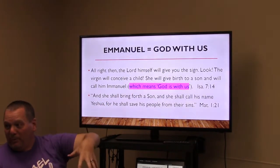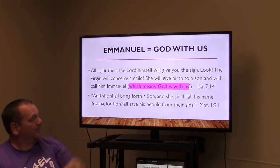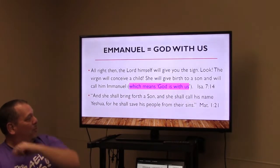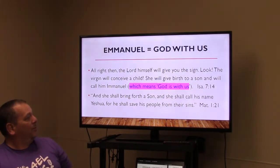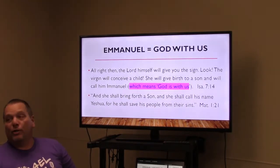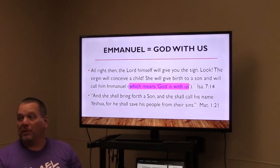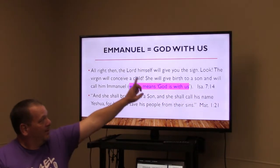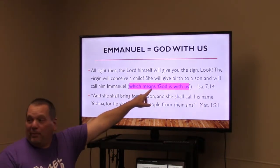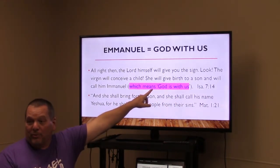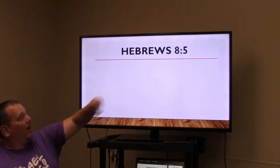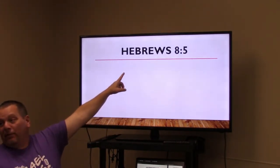Isaiah 7:14 says a virgin will be with child and give birth to a son and call his name Emmanuel, which means 'God with us.' From the very beginning in mishkan, God said he wanted to be with us. And Matthew 1:21 says you shall call his name Yeshua, which means 'our savior.'